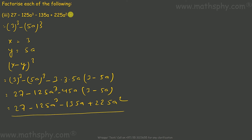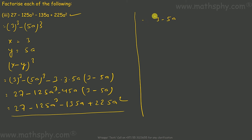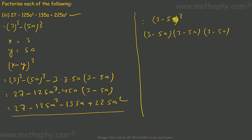You see this and this are both the same. It means this can be written as 3 minus 5a whole cube, or 3 minus 5a once, 3 minus 5a twice, and 3 minus 5a a third time. In place of cube, I did it three times.